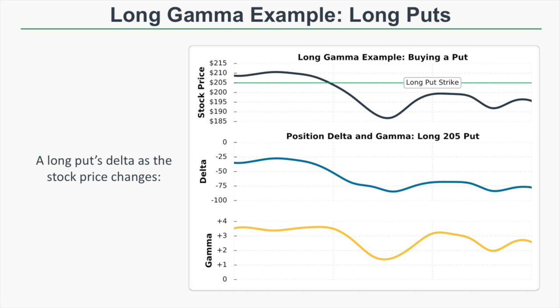The first one-dollar decrease in the stock price is expected to yield a profit of around 37 dollars for the long put trader. However, when the stock price falls and the position delta grows to negative 80, a subsequent one-dollar decrease yields a profit of around 80 dollars. The bottom line is that when you own a put option, you have negative delta and positive gamma, so you want the stock price to decrease — your delta grows more negative, leading to greater profits with each subsequent move.